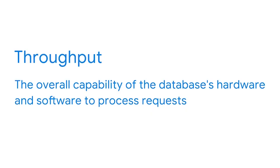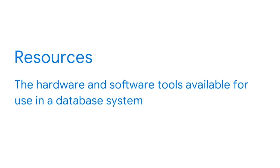Throughput is the overall capability of the database's hardware and software to process requests. Throughput is made up of the input and output speed, the central processor unit speed, how well the machine can run parallel processes, the database management system, and the operating system and system software. Basically, throughput describes a workload size that the system can handle. Resources are the hardware and software tools available for use in a database system, including disk space and memory. Resources can fluctuate, especially if hardware or other dedicated resources are shared with additional databases, software applications, or services. Cloud-based systems are particularly prone to fluctuation.